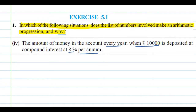The key word in this situation is 'compound interest.' The situation states that we deposit 10,000 in the bank under the condition of 8% per annum compounded interest.